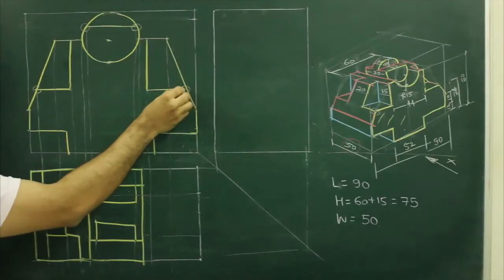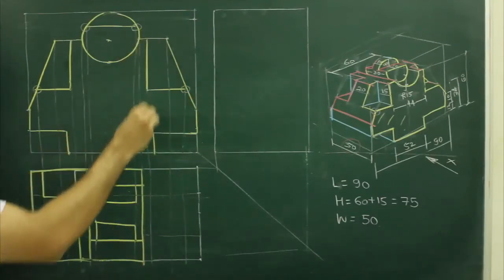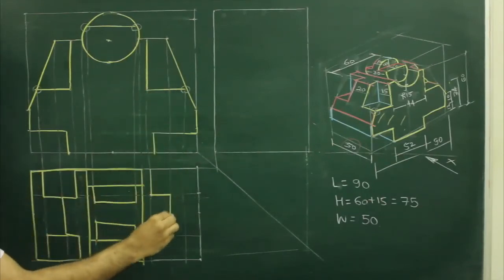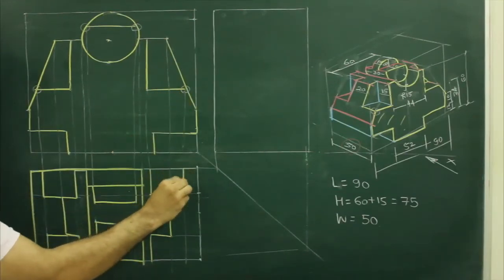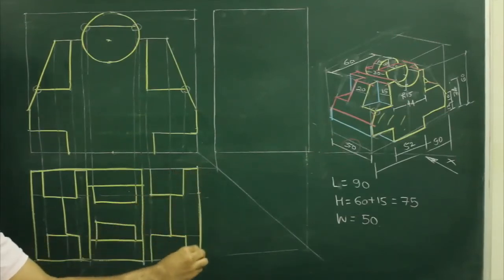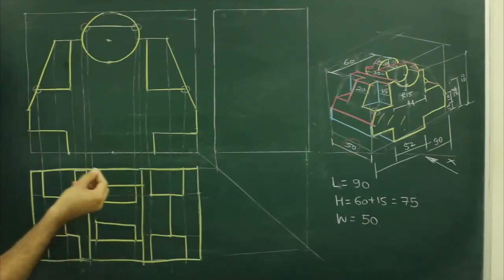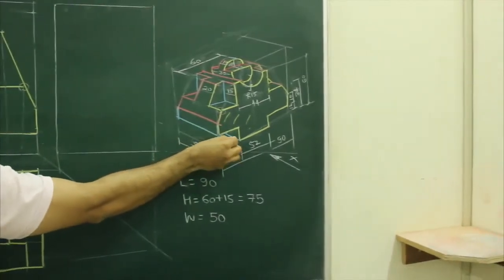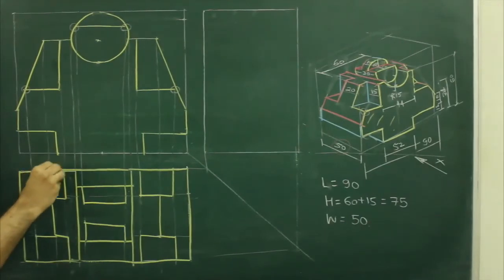So let's compare — first T and the other way. Then there is one more thing: when you see from the top, you won't be able to see this edge. So that edge will be dotted. We will project that from here.